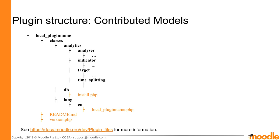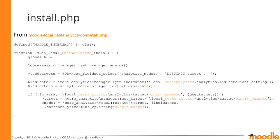The install.php file normally executes after any database schema changes have been made by the plugin via db/install.xml. Normally, a Learning Analytics model won't need to change the database schema. The install.php file registers the model with Moodle. This example is taken from the Test Analytics plugin provided on GitHub. Change the function name to suit your plugin name, and change the other values to the indicated locations as needed.